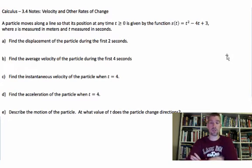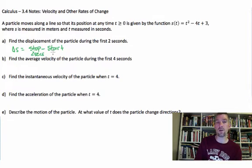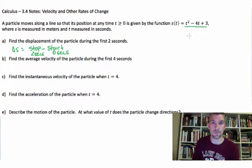Find the displacement of the particle during the first two seconds. When you're looking at displacement, don't forget displacement is the change in position, which is the place where you stop minus the place where you start. In this case, we're stopping at two seconds and we started at zero seconds. We have the position equation here, so all we have to do is look at stop minus start.